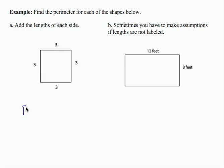So I can say that the perimeter is 3 plus 3 plus 3 plus 3, and that's going to give me 12. So that is the perimeter of this first object.